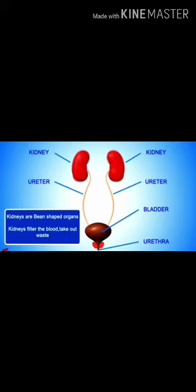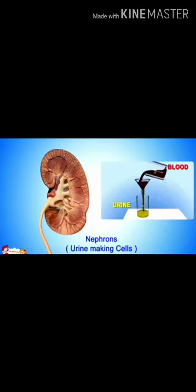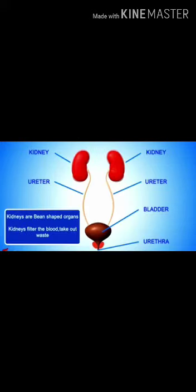When blood enters the kidney, the useful substances are absorbed or filtered back into the blood, while waste substances get dissolved in water and are removed as urine. This absorption and filtration is carried out by the functional unit of the kidney called the nephron. The urine thus formed is collected and passed to the urinary bladder.